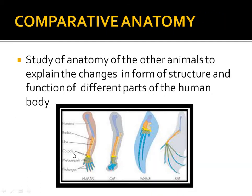Comparative anatomy involves comparing other animals to explain changes in the human body. It is the study of anatomy of other animals to explain changes in form, structure, and function of different parts of humans. For example, in humans we have hands, while in birds the hand is changed into wings — the structure and function of the parts have changed.